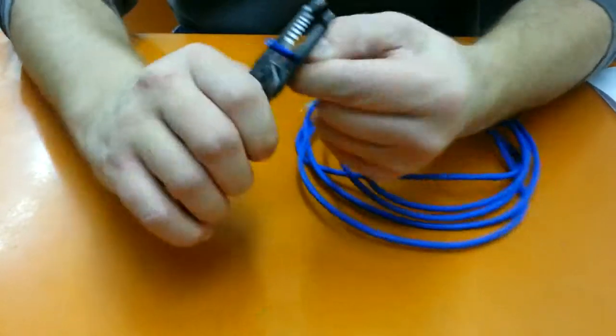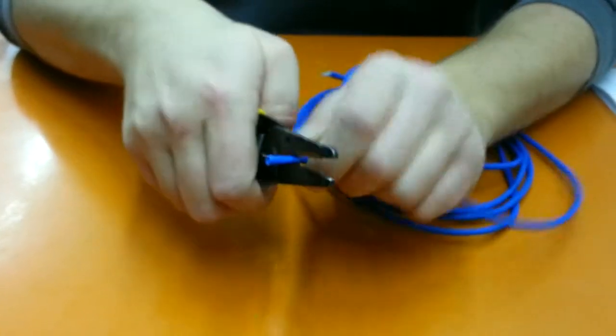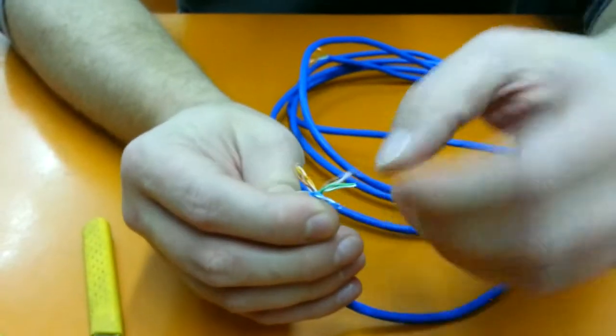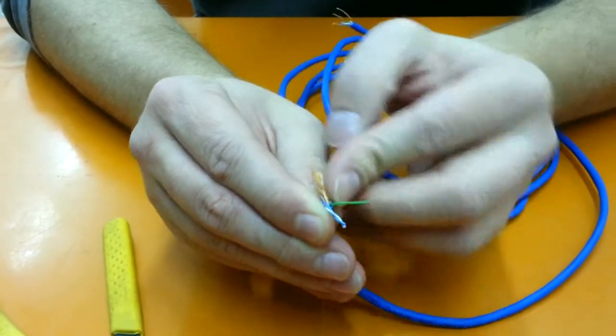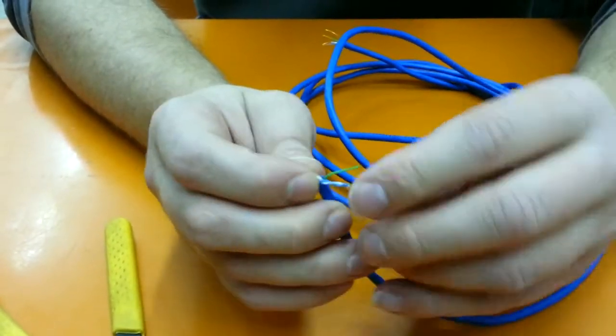First we're going to strip off an inch of the insulation, then we're going to separate out the individual wires. For this video we'll be using blue, blue-white, and green. Strip about a quarter of an inch of each individual wire.